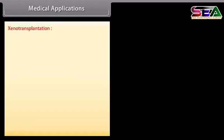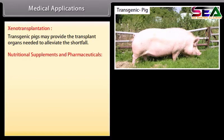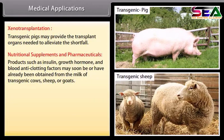Medical applications: xenotransplantation — transgenic pigs may provide the transplant organs needed to alleviate the shortfall. Nutritional supplements and pharmaceuticals: products such as insulin, growth hormone, and blood anti-clotting factors may soon be, or have already been, obtained from the milk of transgenic cows, sheep, or goats.